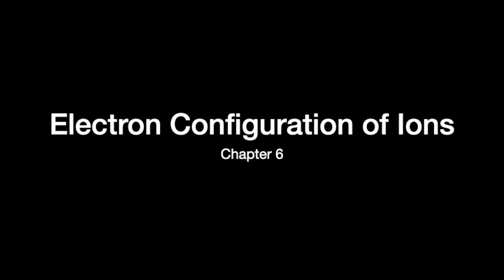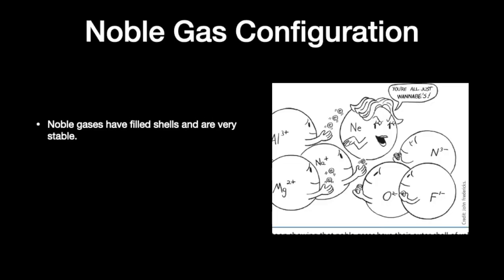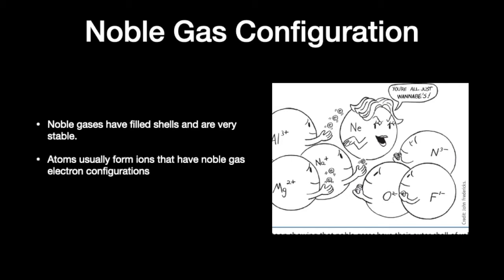Here I want to talk about the electron configuration of ions. Remember that ions have different numbers of electrons compared to their atoms. It's really important to recognize that the noble gas configuration is extremely stable, and it turns out that atoms usually form ions that have noble gas electron configurations.